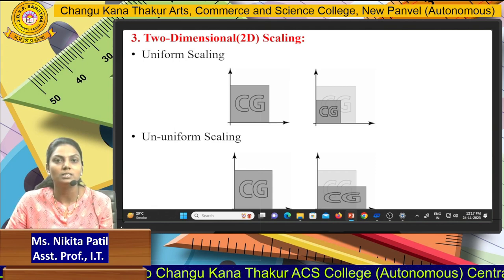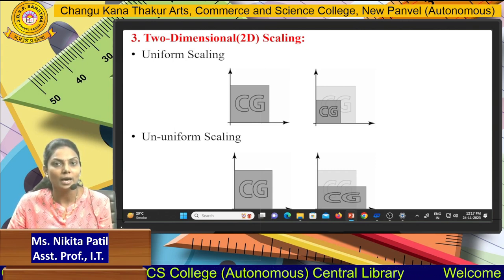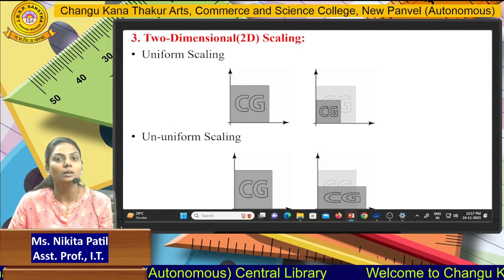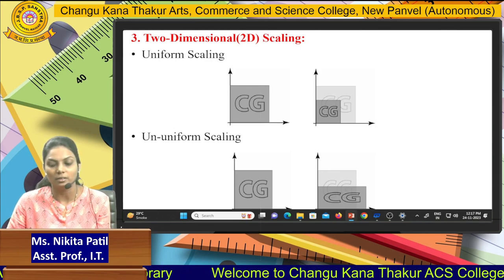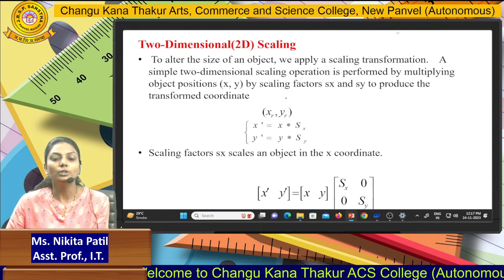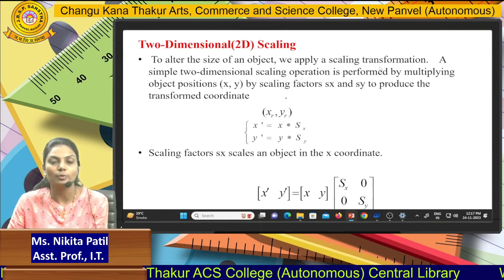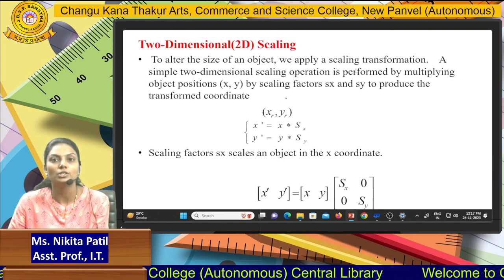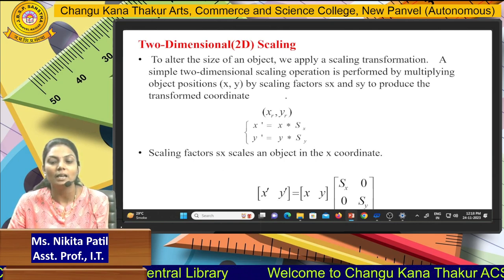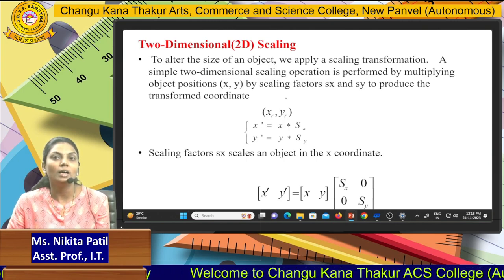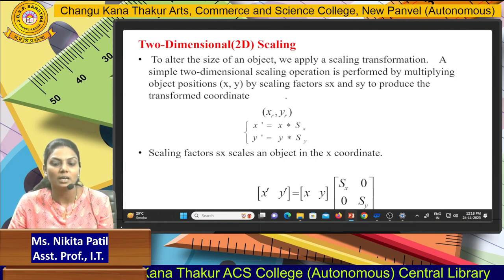In non-uniform scaling, the diagram or picture is not scaled uniformly — it can be represented either larger or smaller in an irregular way. Two-dimensional scaling is used to alter the size of an object by applying a scaling transformation. A simple 2D scaling operation is performed by multiplying object coordinates on the x and y axes by scaling factors sx and sy.